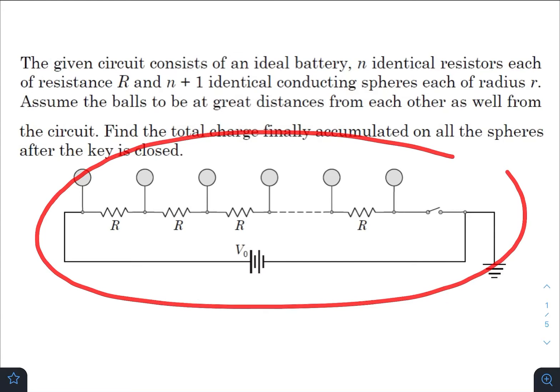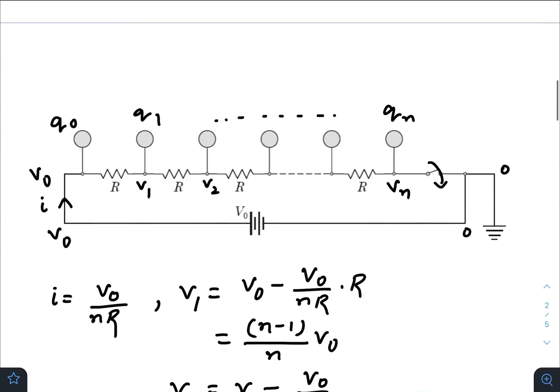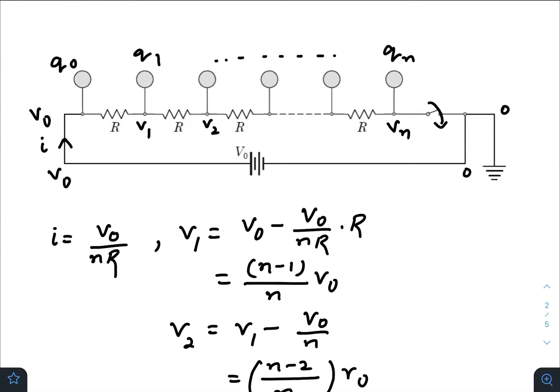As you can see, let us go to the solution page. After turning on the switch, as this point is grounded, this will be of zero potential. This will be V₀. Now the potential at each point is gradually decreasing.